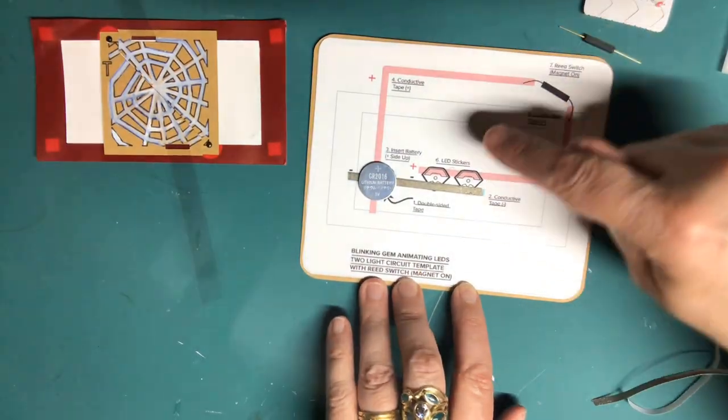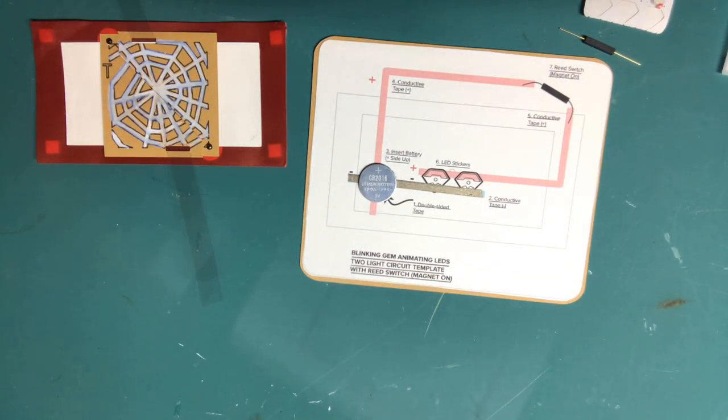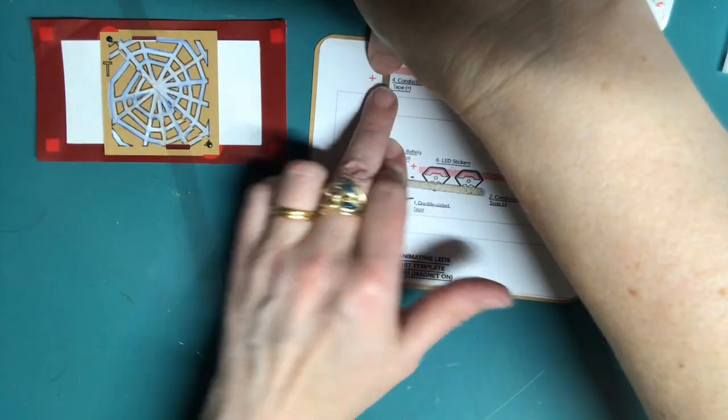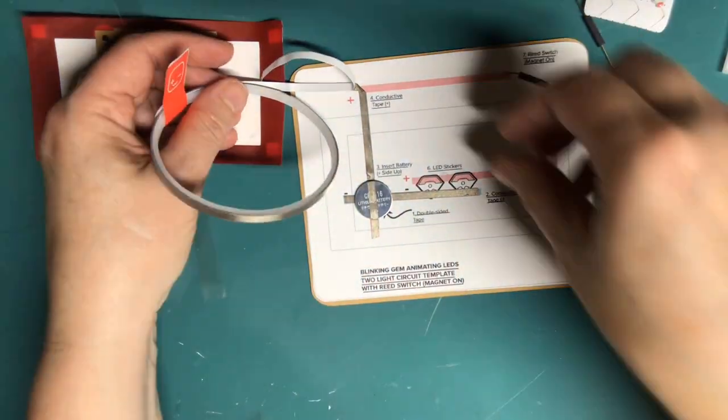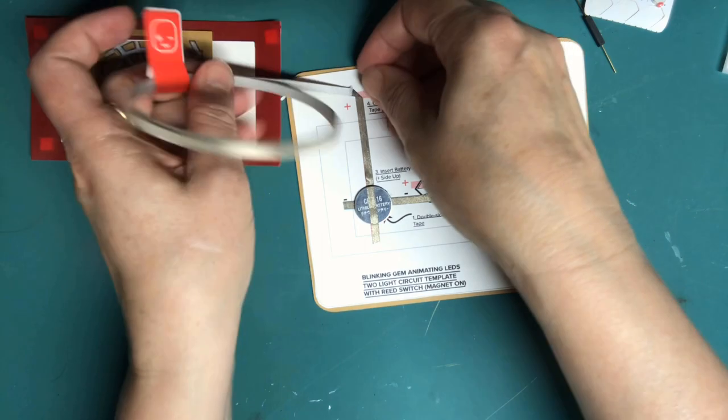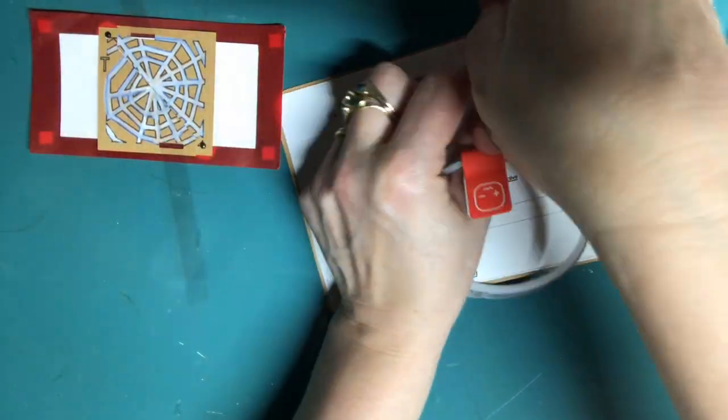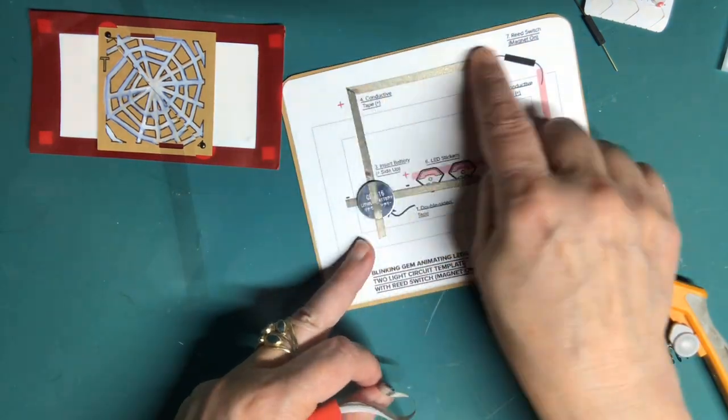To create the positive lead of your circuit, add pieces of conductive fabric tape over the red lines on your template, leaving a gap for the reed switch. Be sure to cover the entire red line. Try not to trim your tape too short or you'll need a patch like I did.